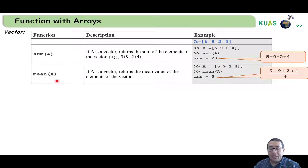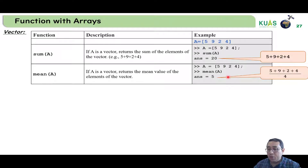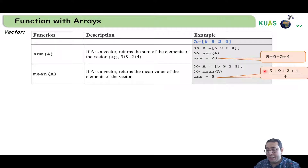What if we need to estimate the mean or average of a — of all the elements of a? The average is the summation of all elements divided by the number of elements. So the summation is 20 divided by 4, so the answer will be 5.